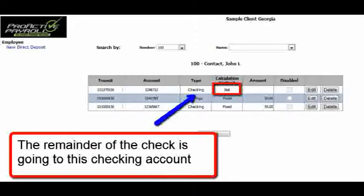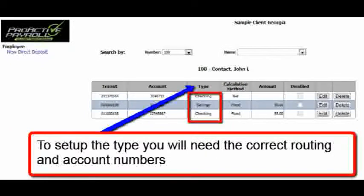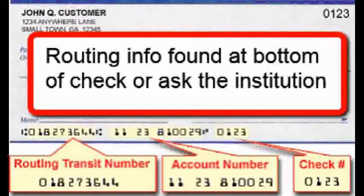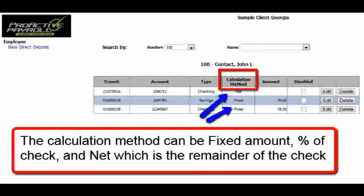To set up the checking and savings accounts, we're going to need the right routing and account numbers. For checking accounts, it's pretty simple — the routing number is the nine-digit transit number at the bottom, and the account number is there as well. But for savings accounts, my advice is to call the bank or institution and get those account numbers directly from them, so we can make sure your payroll is routed to the correct location.